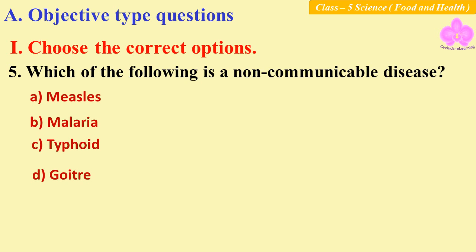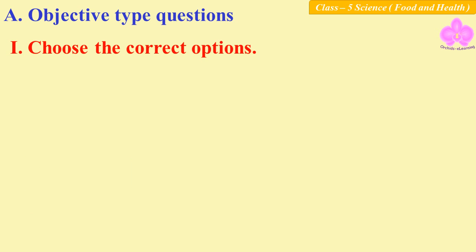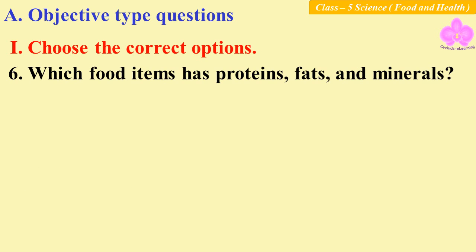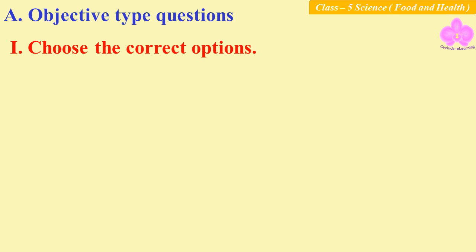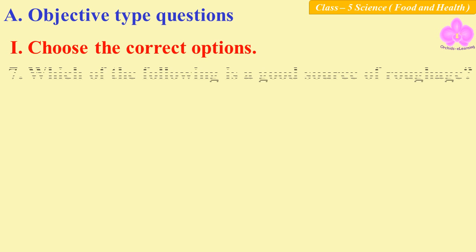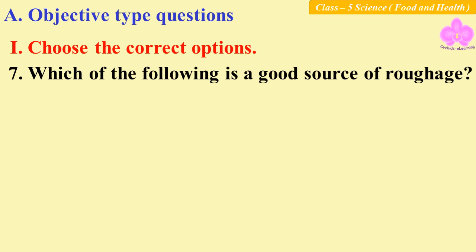Question six: which food item has proteins, fats, and minerals? Options: A: milk, B: fruits, C: rice, D: sugar. Answer: A, milk. Question seven: which of the following is a good source of roughage? Options: A: milk, B: honey, C: corn, D: eggs. Answer: C, corn.